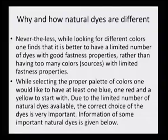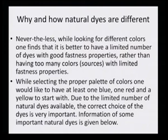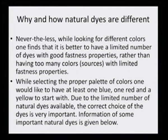How and why are natural dyes different? While looking for different colors, one finds that it is better to have a limited number of dyes with good fastness properties rather than having too many colors or sources with limited fastness properties. It is very important for a dye to have some qualities, particularly the fastness quality. For example, if a cloth is dyed with turmeric, turmeric is considered to be a fugitive dye — it does not hold to the fabric or material very well and is washed off.